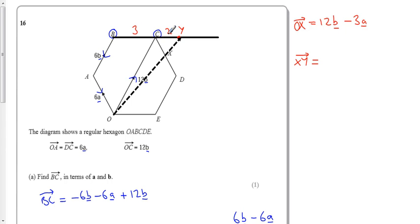Well, from here, from C, well, X, this little bit here is worth 3a.